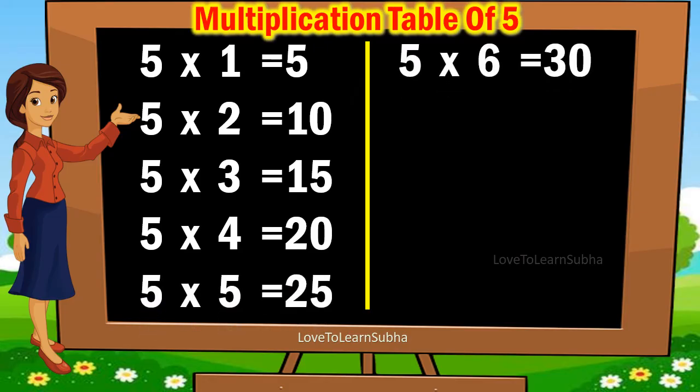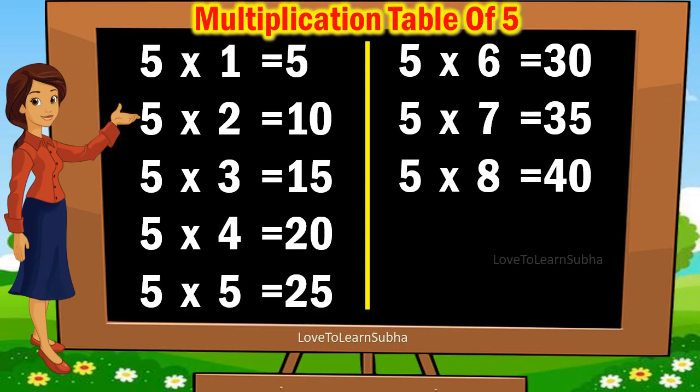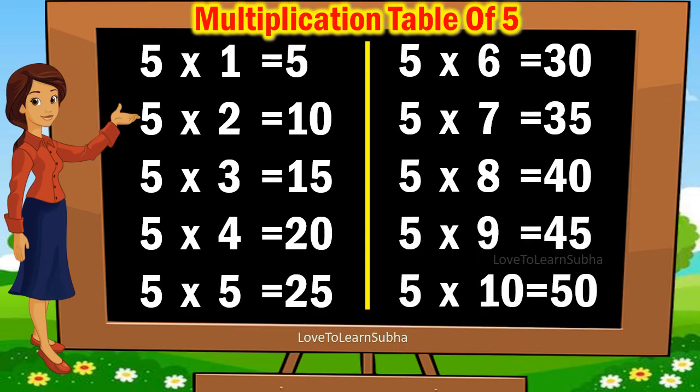5 sixes are 30, 5 sevens are 35, 5 eights are 40, 5 nines are 45, 5 tens are 50.